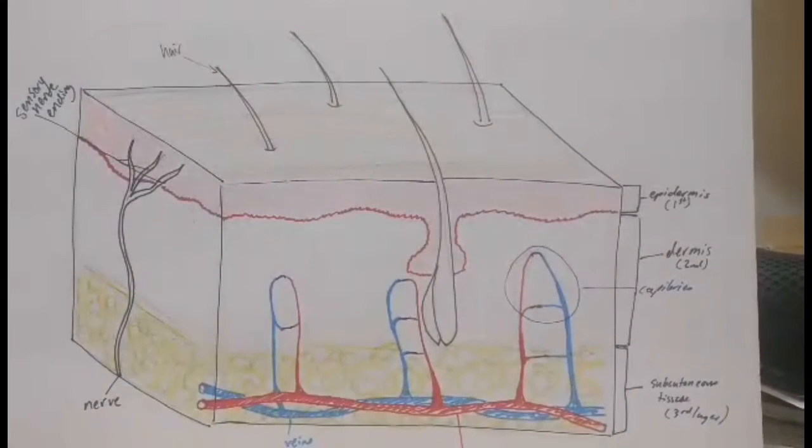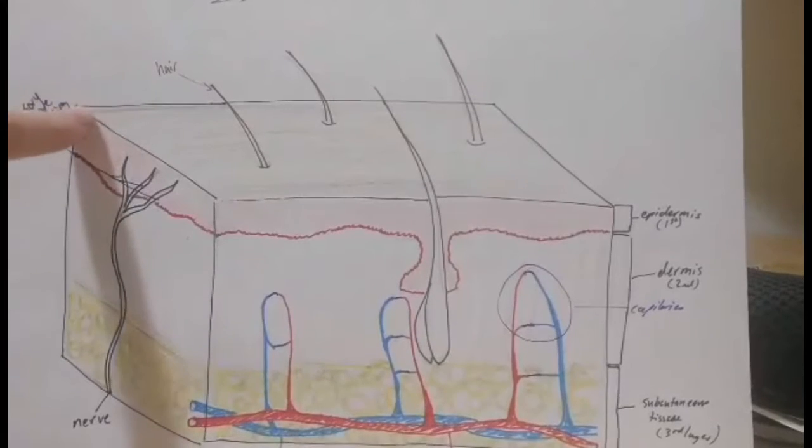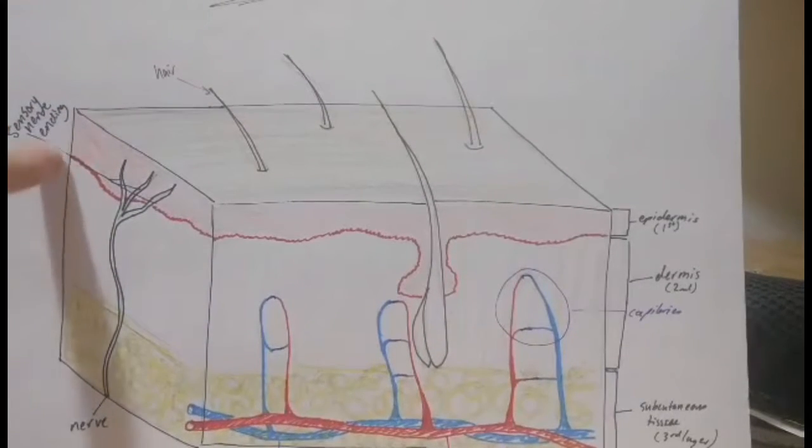So the first ones we're going to look at are abrasions, scrapes, and cuts. When we're talking about abrasions, scrapes, and cuts, we're mostly talking about injuries to this first layer of skin, the epidermis, and a little bit into the second layer, the dermis.